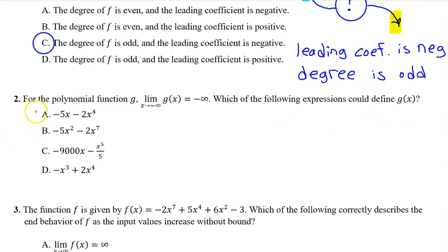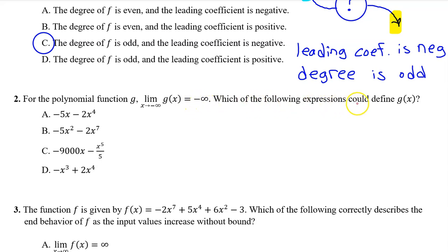Number 2. For the polynomial function g, the limit as x approaches negative infinity of g(x) is equal to negative infinity. Which of the following expressions could define g(x)?